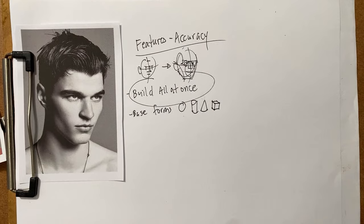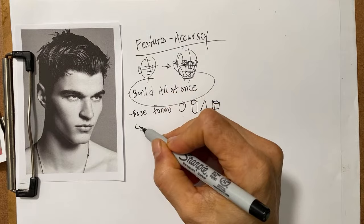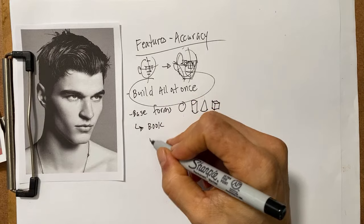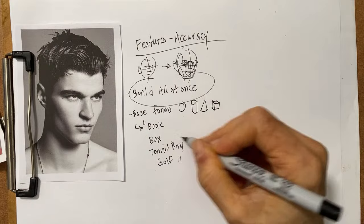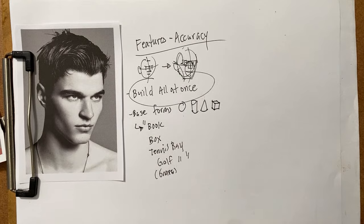For the face, we're going to use what I like to call the book, the box, the tennis ball, and the golf ball — or grape. So basically: box, box, egg, cylinder. It's very simple when we take a look at this.